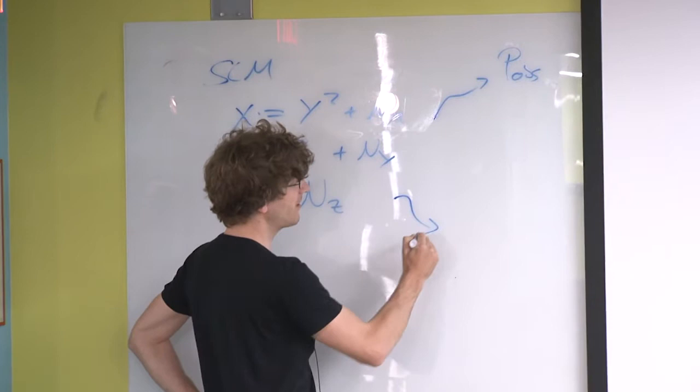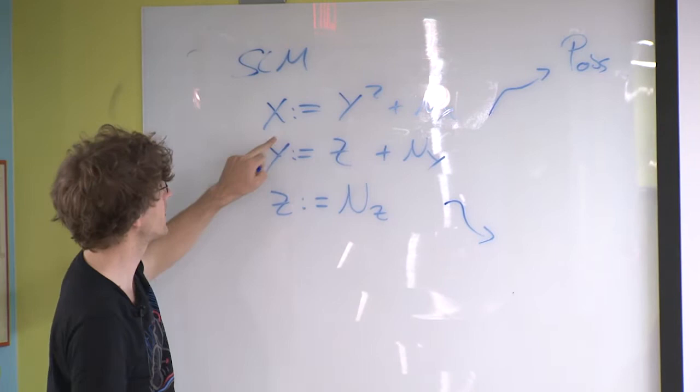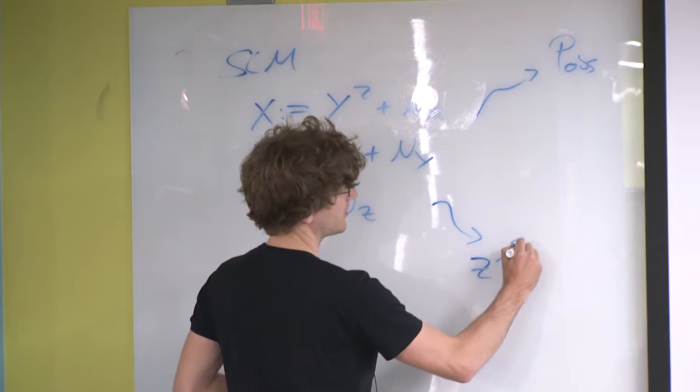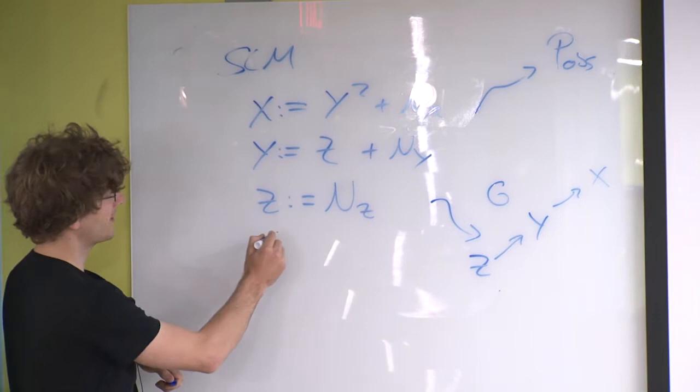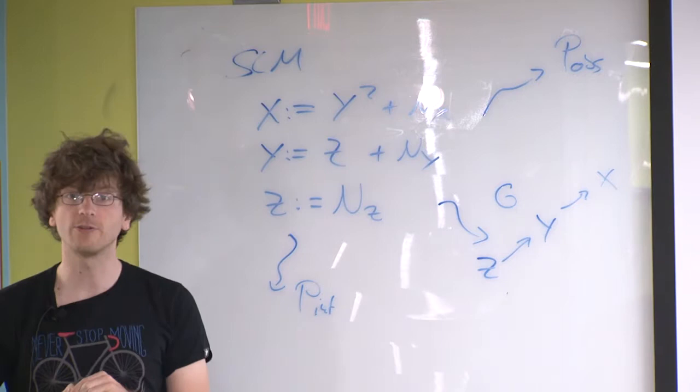At the same time, this also induces a graph. This was easy because we just draw edges from variables that appear on the right-hand side to variables on the left-hand side. So it's just a chain: Z is causing Y, and Y is causing X. We discussed a lot in the first part how to compute interventional distributions out of this structural causal model, and we looked at adjustment formulas and so on.